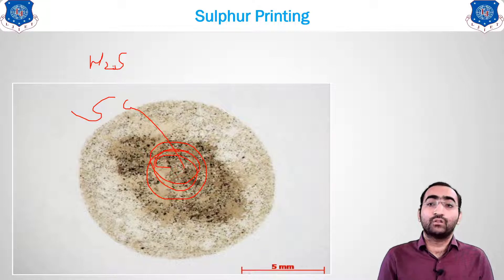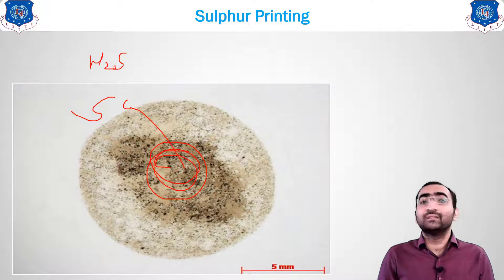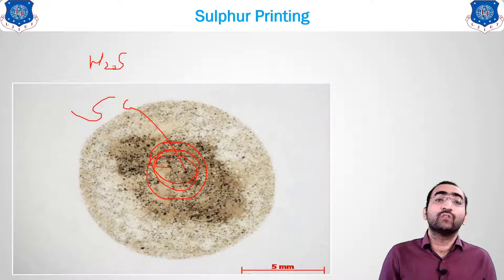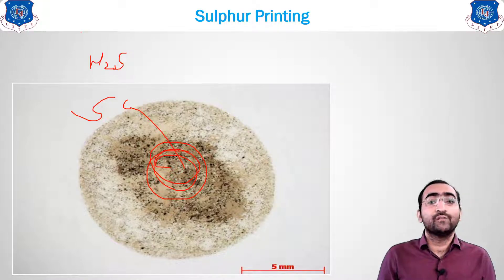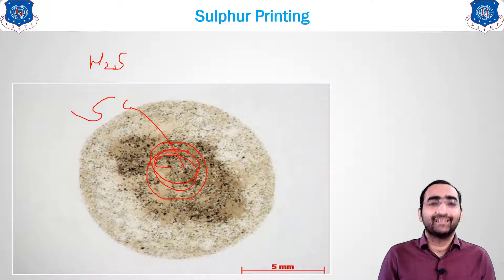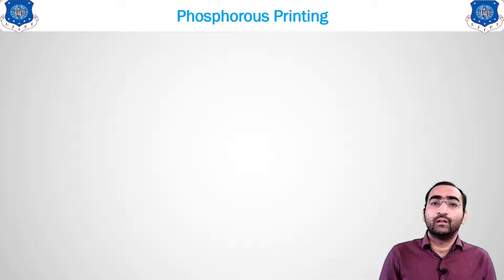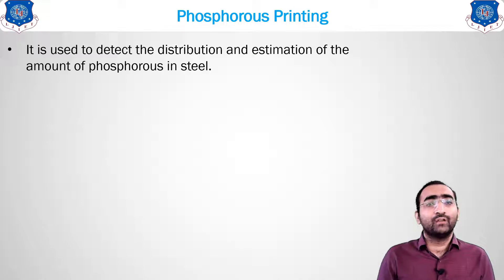This is how sulfur printing works — the brown spots on the specimen indicate the sulfur content. This is an older technique; nowadays spectroscopic meters and modern machines directly indicate the content of particular elements in steel samples.